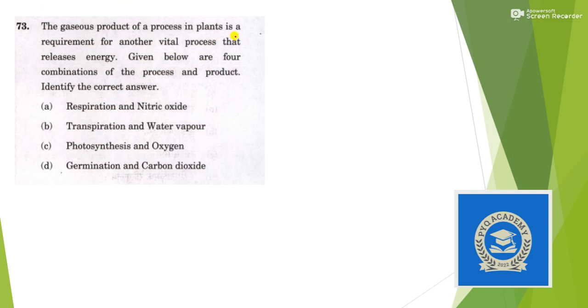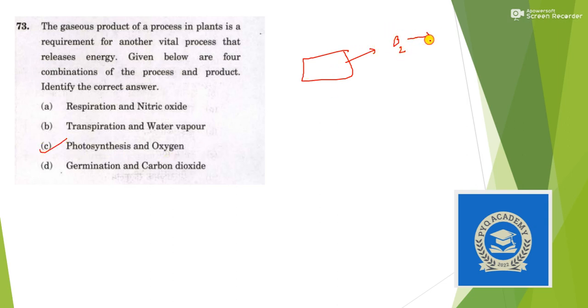Next: the gaseous product of a process in plants is a requirement for another vital process that releases energy. The answer should be option C — photosynthesis and oxygen, because in photosynthesis oxygen is released and this oxygen is used in respiration.